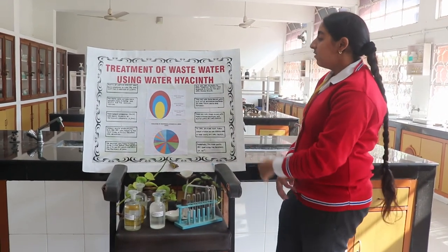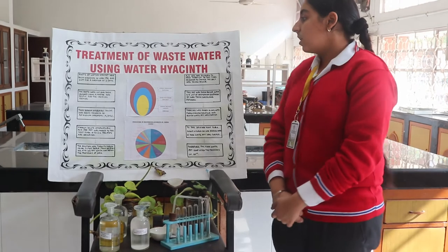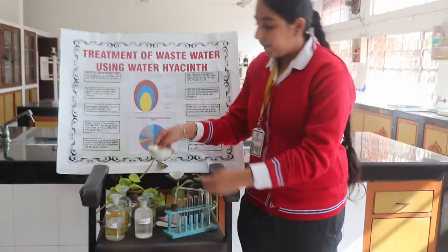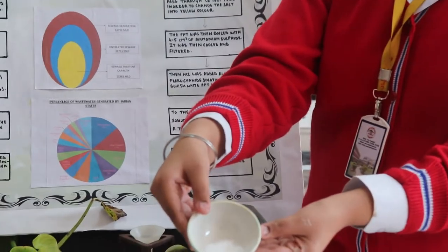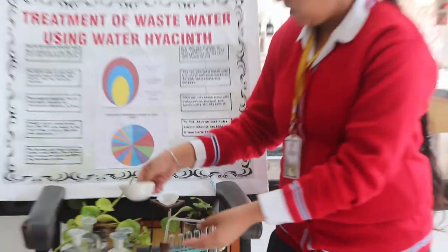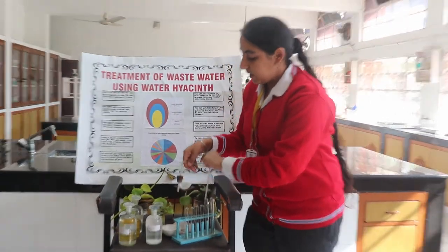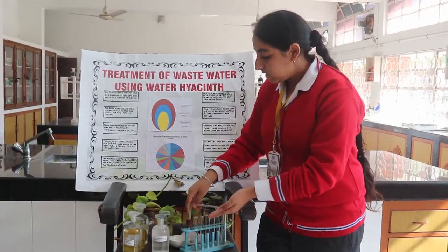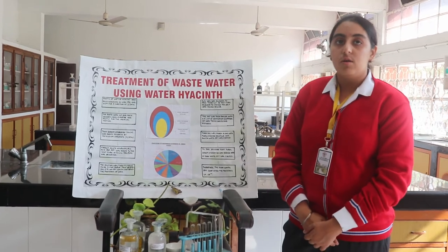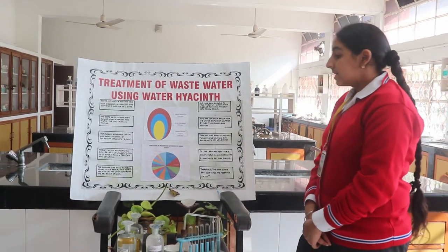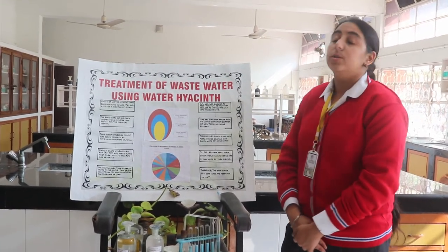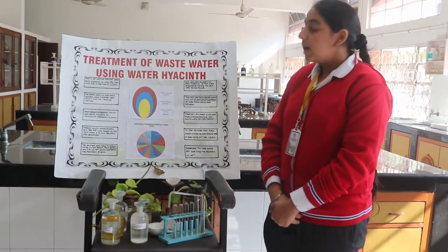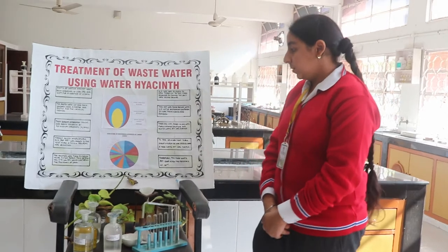Next, for the test of cadmium, H2S gas was allowed to pass through the cadmium test tube. It was passed using Kipp's apparatus into the cadmium test tube to change the salt into a yellow colour. Next, the precipitate was then boiled with around 4 to 5 cm³ of ammonium sulphate. It was then filtered and cooled, then dilute hydrochloric acid was added.